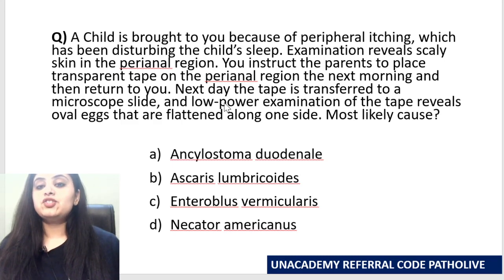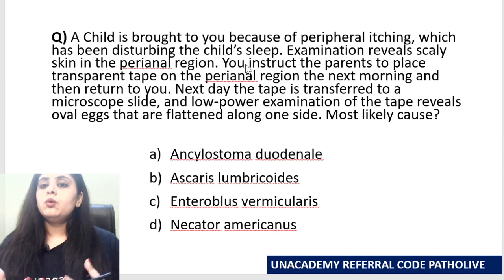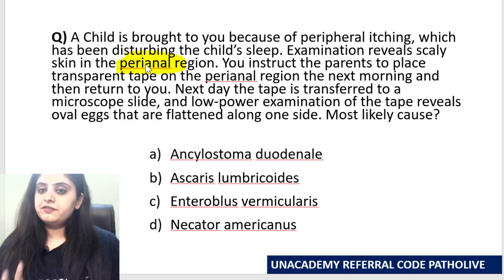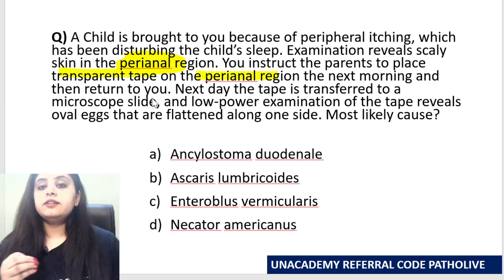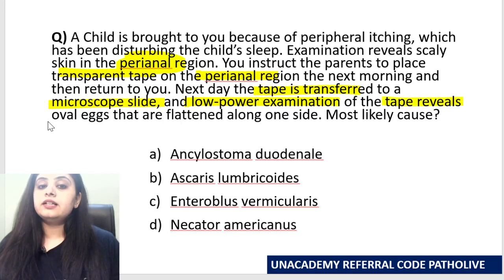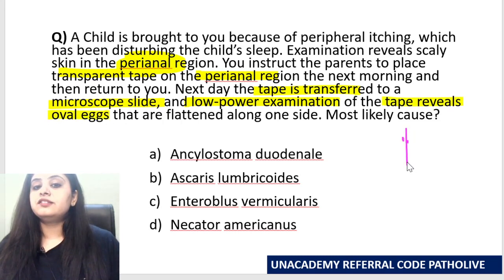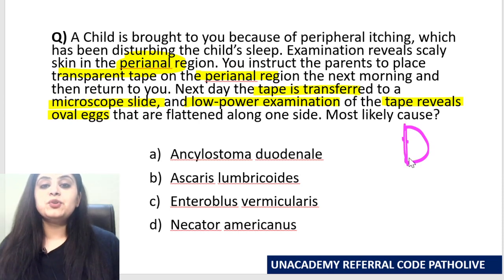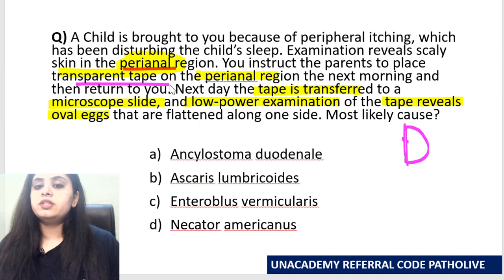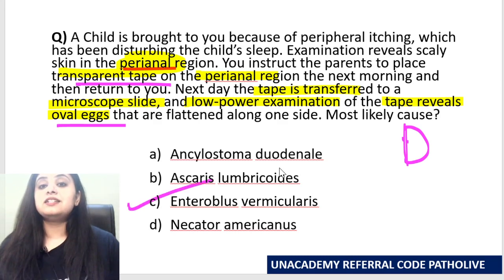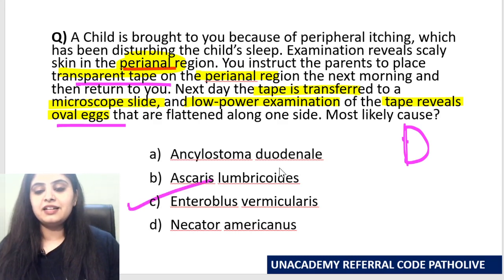Next question: A child is brought with perianal itching, particularly disturbing the child's sleep. The parents are instructed to place a transparent tape in the perianal region overnight. On microscopic examination of the tape at low power, oval eggs flattened on one side are seen — plano-convex eggs. The intense perianal itching, tape collection method, and plano-convex egg morphology point to Enterobius vermicularis.